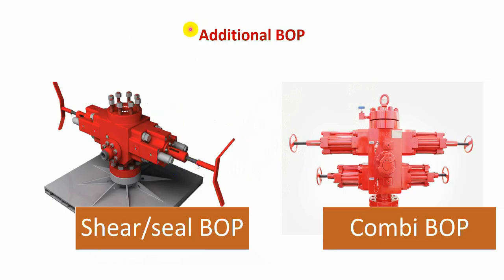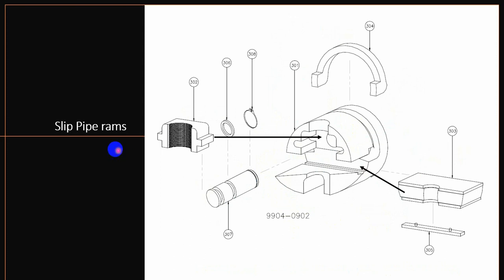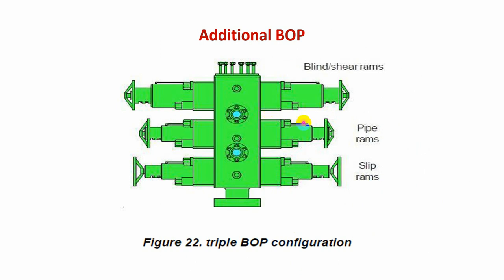There are different types of BOP. A combi BOP consists of a shear-seal ram (combination of shear ram and seal ram) and a slip-pipe ram (combination of slip ram and pipe ram). It may also be only a shear-seal ram without the combi configuration. A triple BOP consists of a blind-shear ram combined in one, then a pipe ram, and then a slip ram — or the slip ram and pipe ram may be reversed.